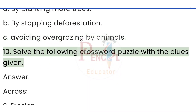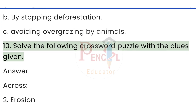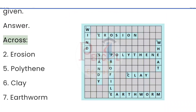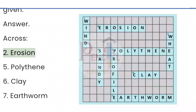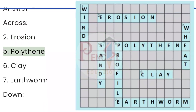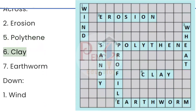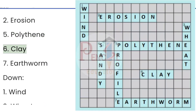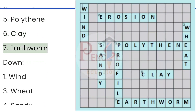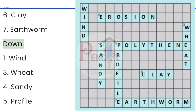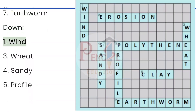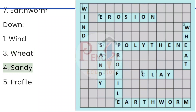Question 10: Solve the crossword puzzle. Answer — Across: 2 — erosion, 5 — polythene, 6 — clay, 7 — earthworm. Down: 1 — wind, 3 — wheat, 4 — sandy, 5 — profile.